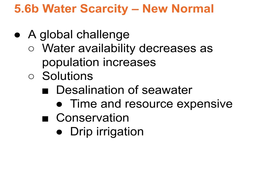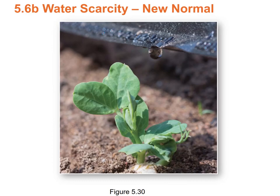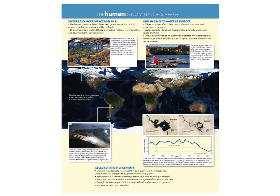Drip irrigation, where instead of flooding a whole field you deploy water directly to the plants, is a key conservation strategy. And that's it for Chapter 5 — that went super fast. Up next is Chapter 6. Have a good day.